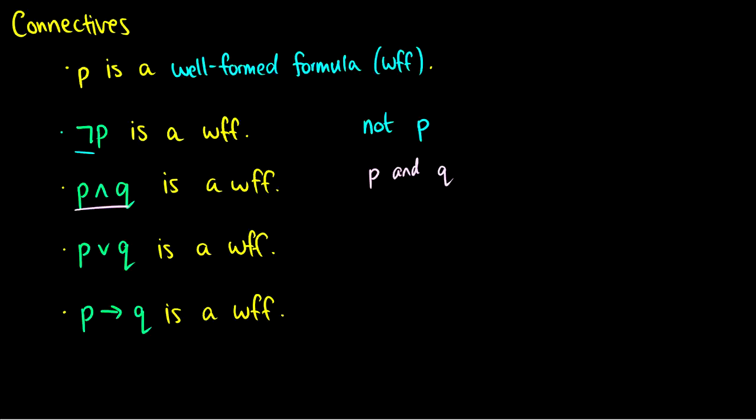Third, P or Q is a woof. So this is P or Q, and sometimes you might just call it P V Q or P wedge Q. And finally, the fifth one, P arrow Q, or rather if P then Q is a woof. So if we have a proposition, we can do not P, we can do P and Q, we can do P or Q, and then we can also do if P then Q.